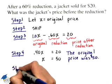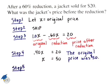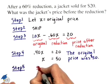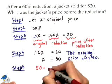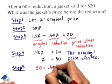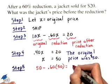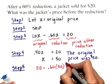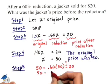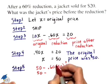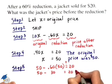Let's check this in step 5. If the original price was $50, I can start with $50 and subtract the 60% reduction: 0.60 times 50. I should get the price after reduction of 20. 50 minus 0.60 times 50 is 30, and that does equal 20, so our answer checks.